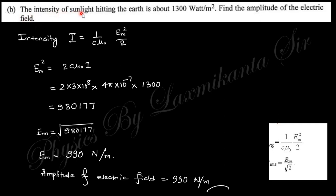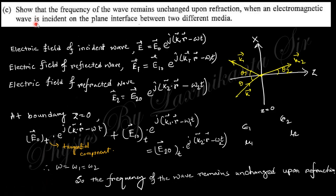Next question: the intensity of sunlight hitting the earth is about 1300 W/m². Find the amplitude of the electric field. The intensity is related with the magnitude of the electric field as I = (1/cμ₀)E²/2. If you put this value, you will obtain this relation and easily find out this value.